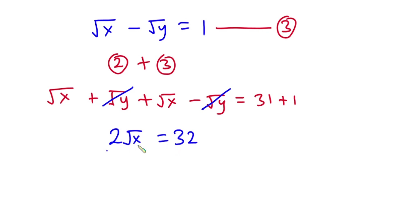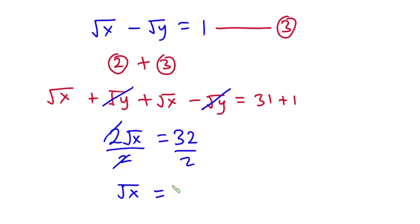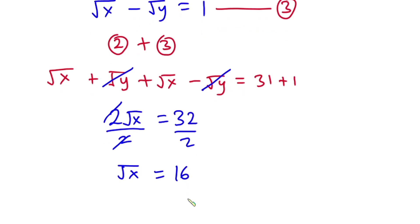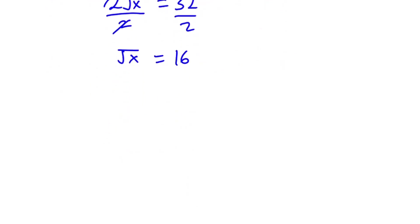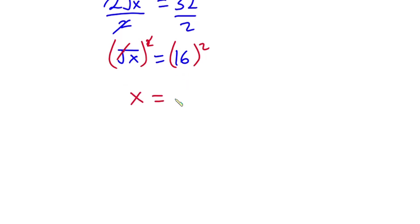Let's divide each side by 2 so that cancels. Now we have square root of x is equal to 32 divided by 2, which is 16. Since we want to find the value of x, let's raise each side of the equation to the second power so that the square cancels the square root. Now we have x is equal to 16 squared, which is 256.